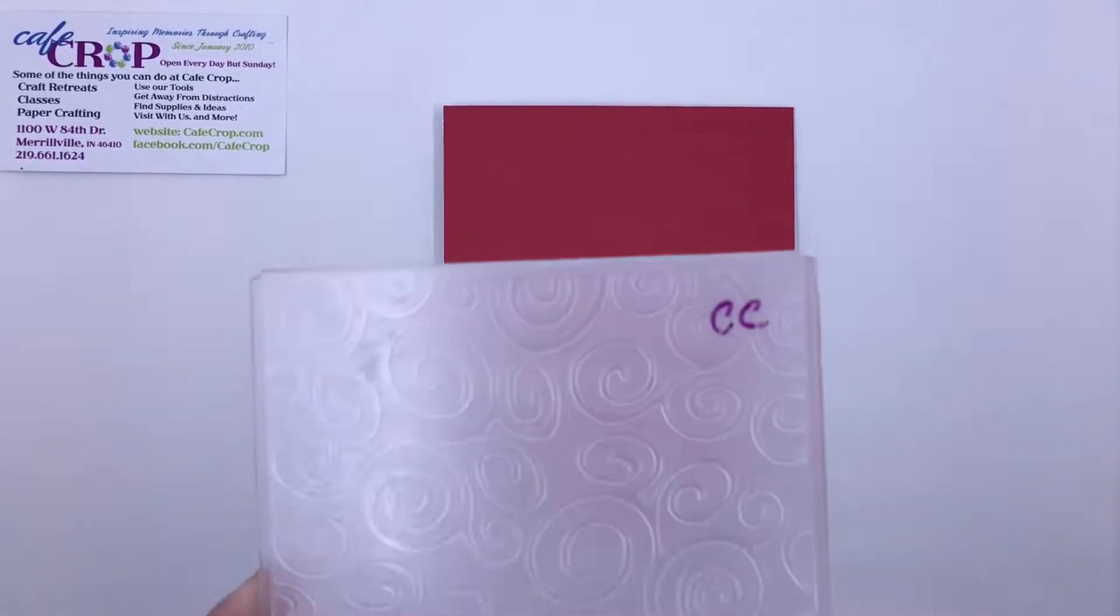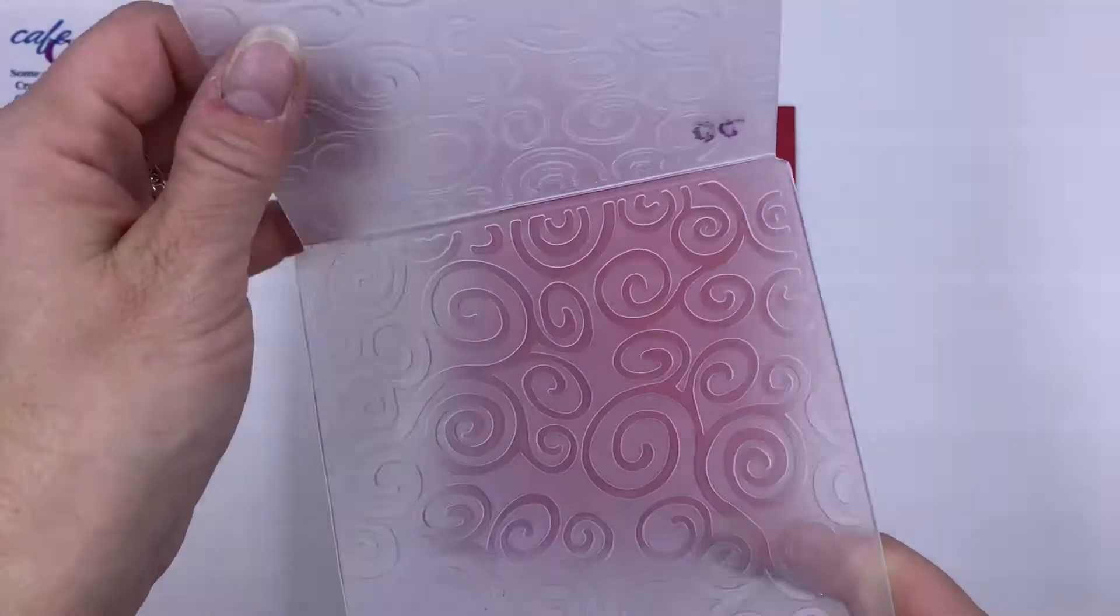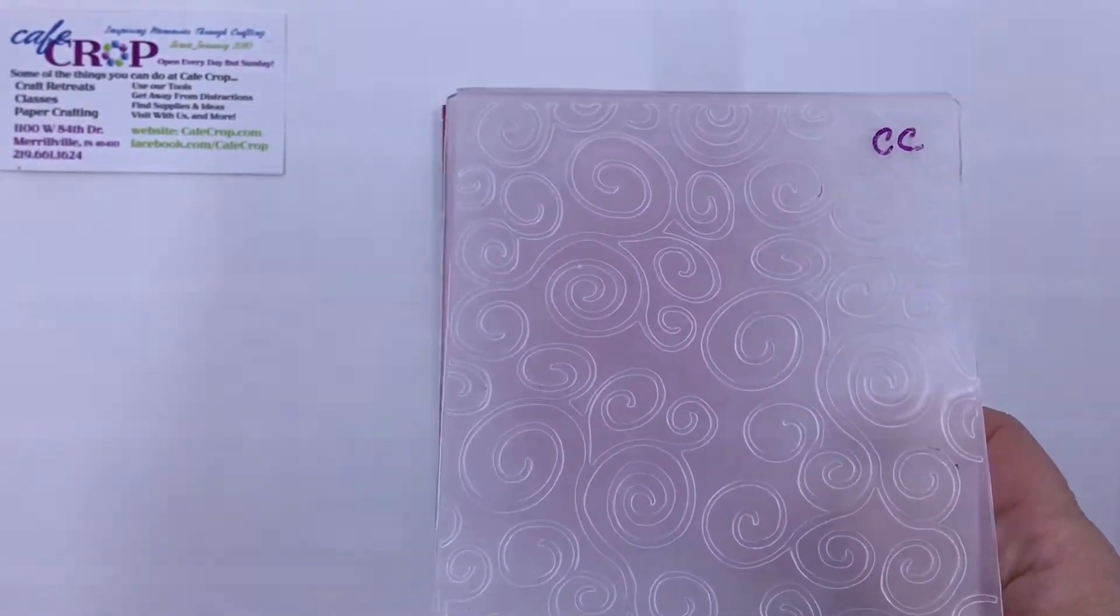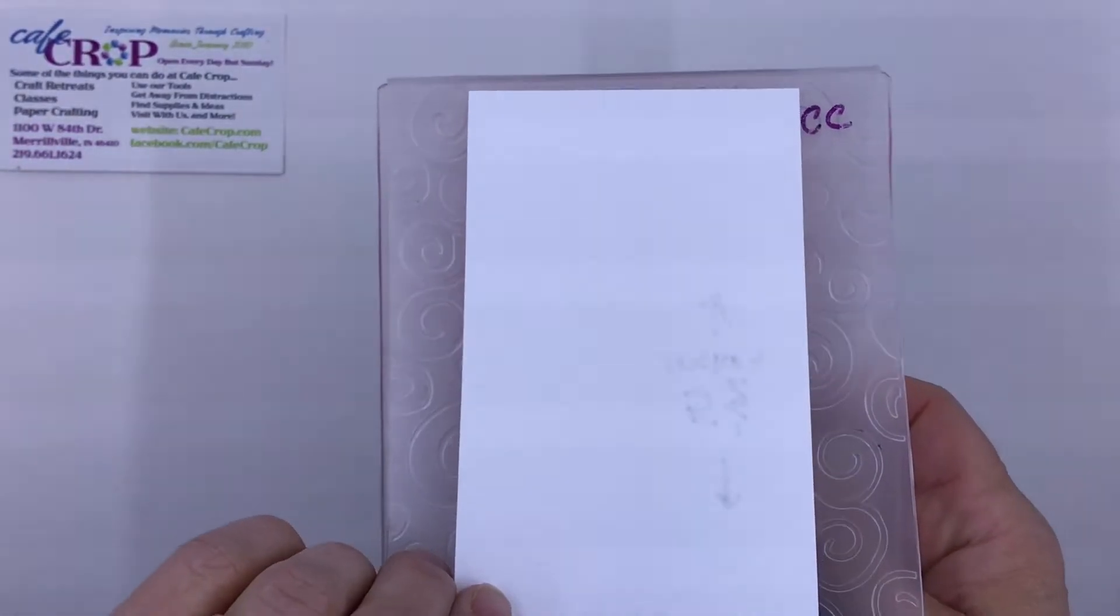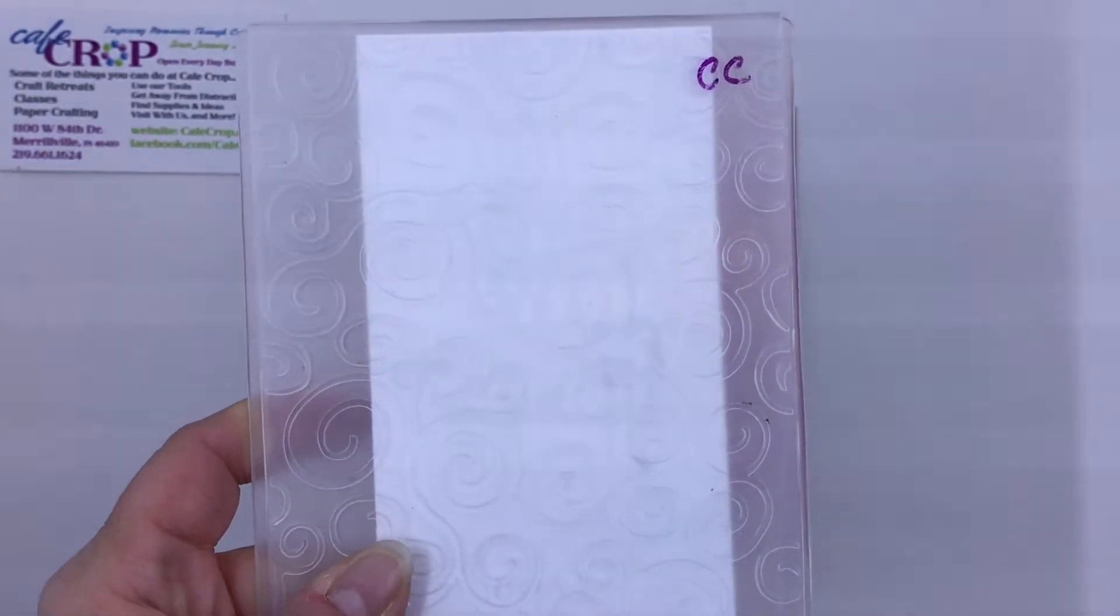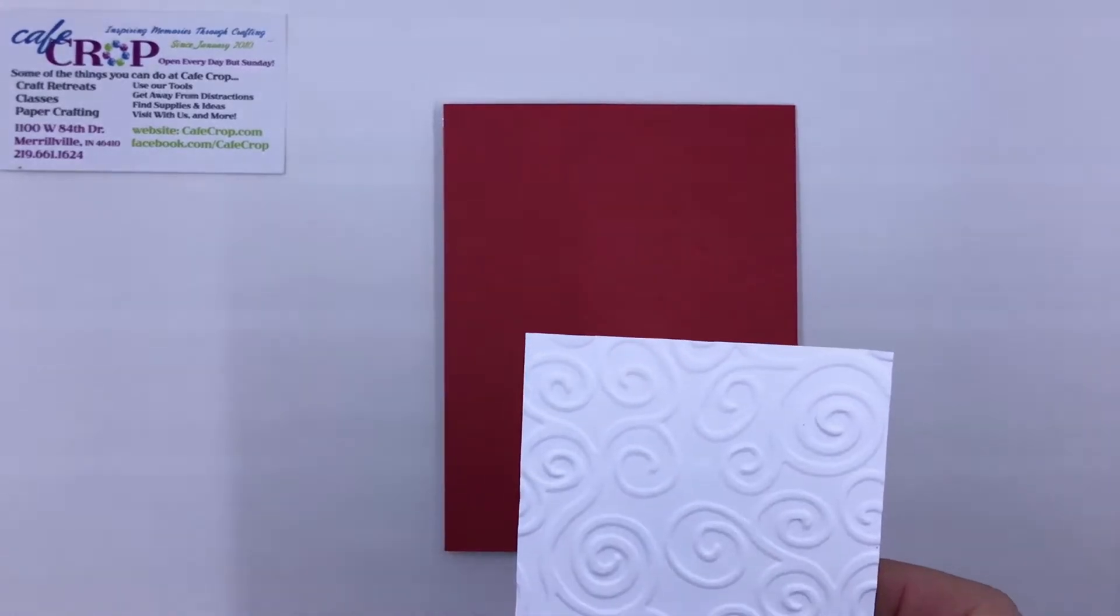And then we're going to take an embossing folder. This one happens to be swirls, so hopefully you can see that. We're going to take our piece of white and pop it in our embossing folder and run that through with whatever machine you have for embossing.